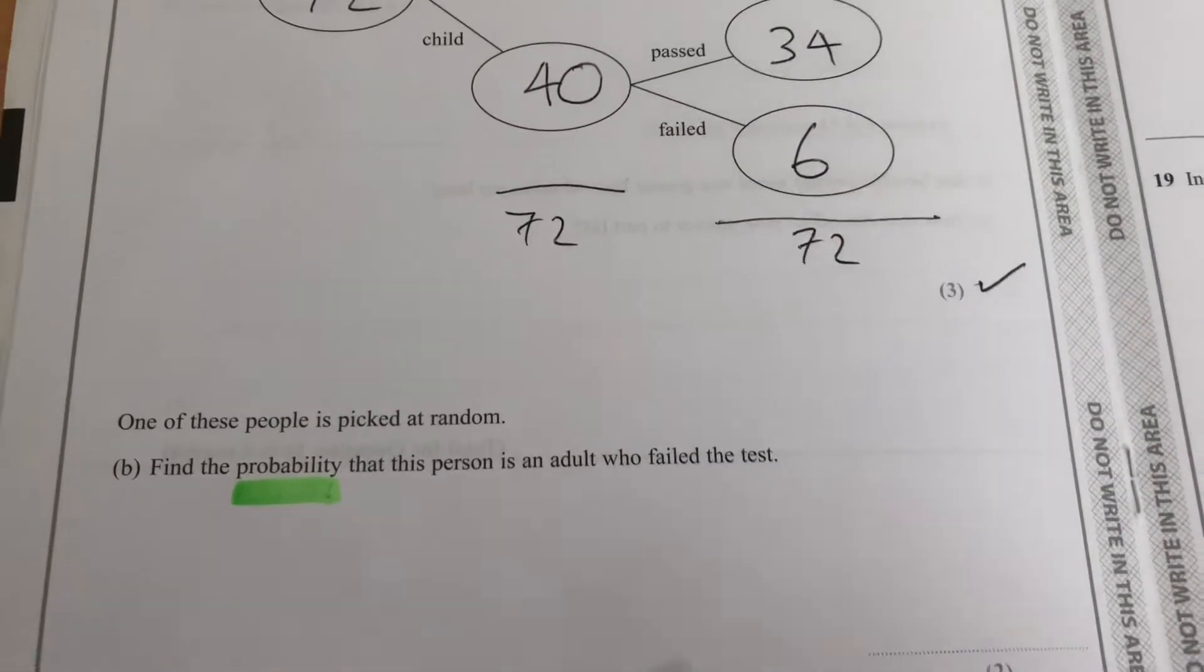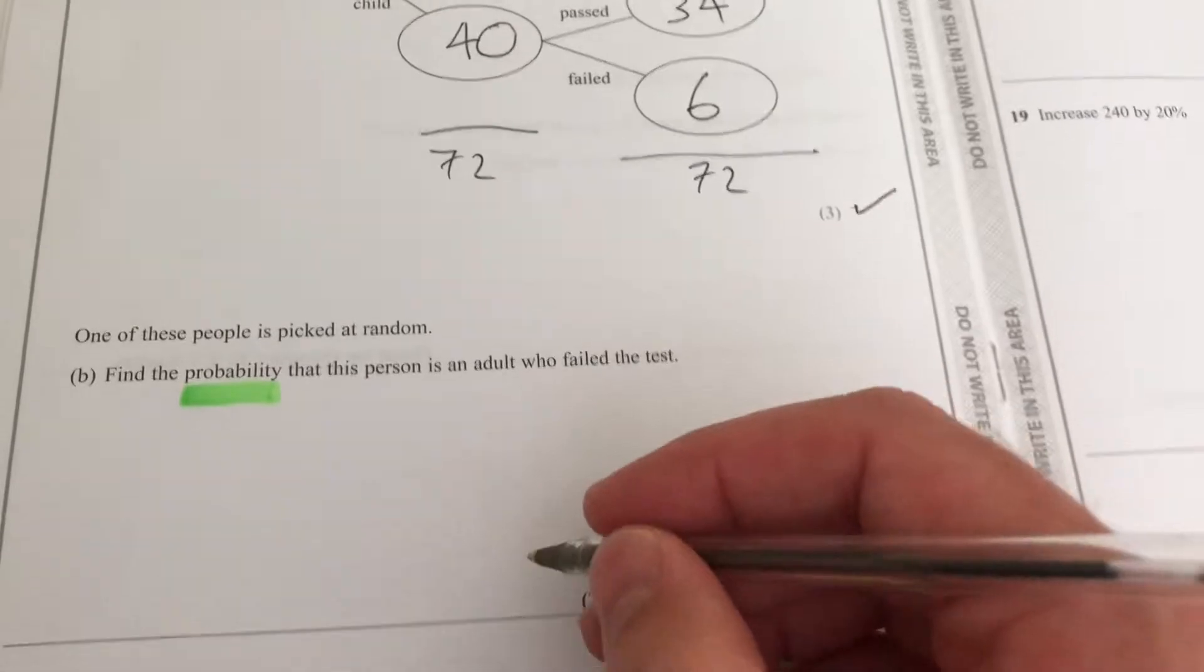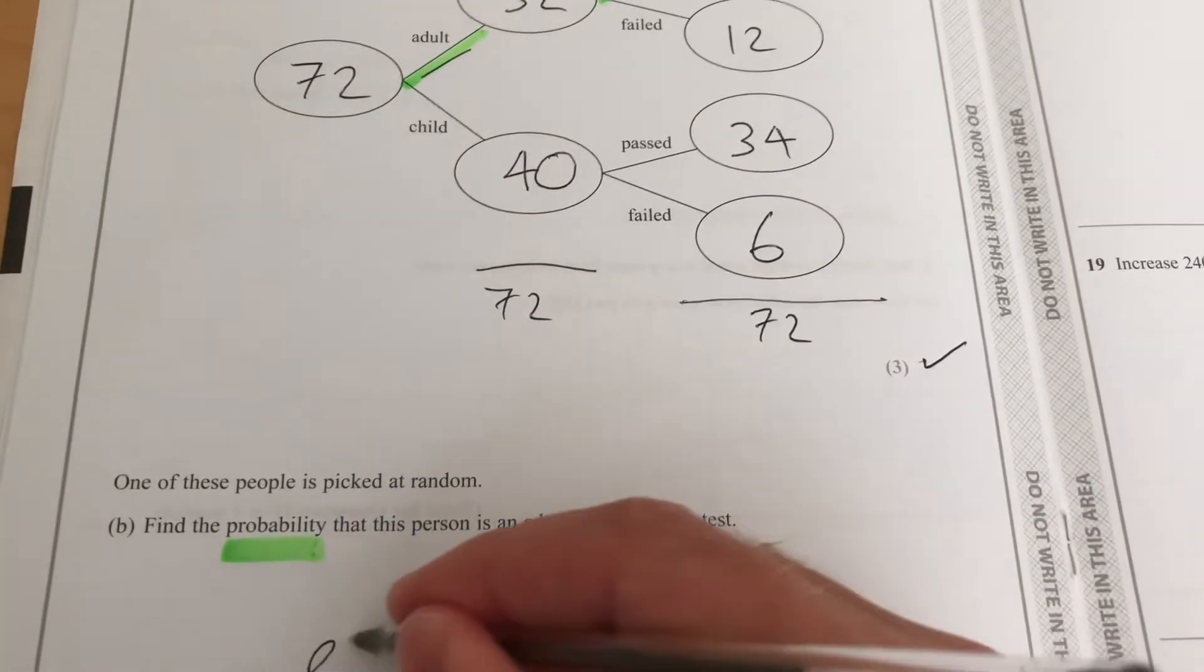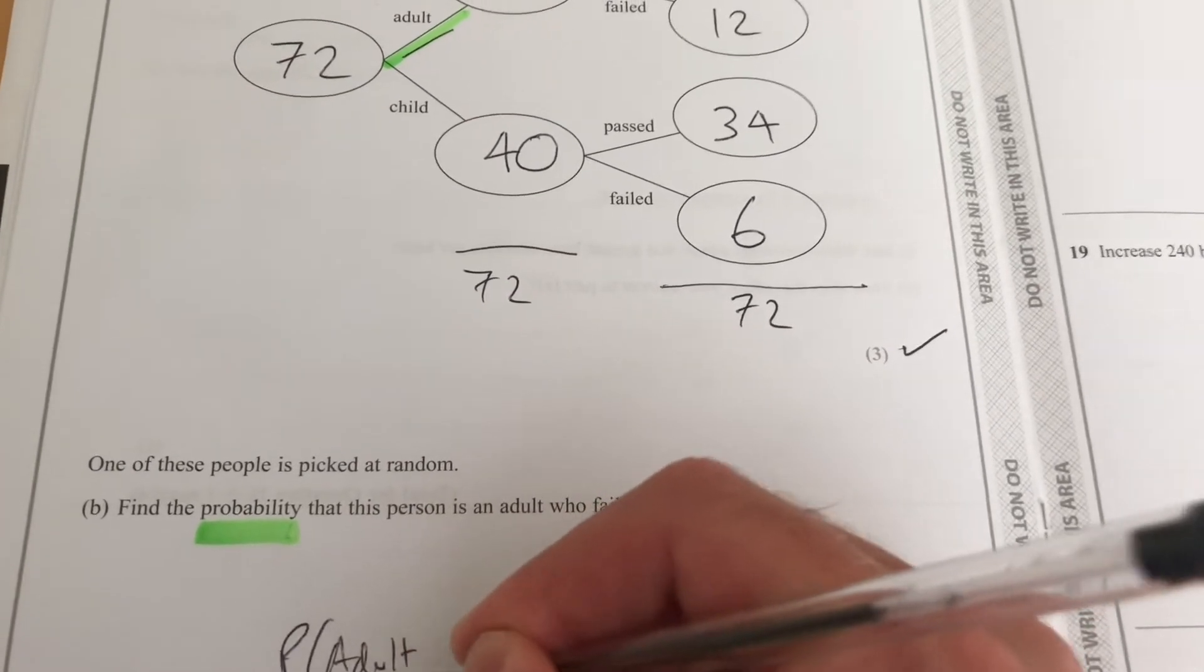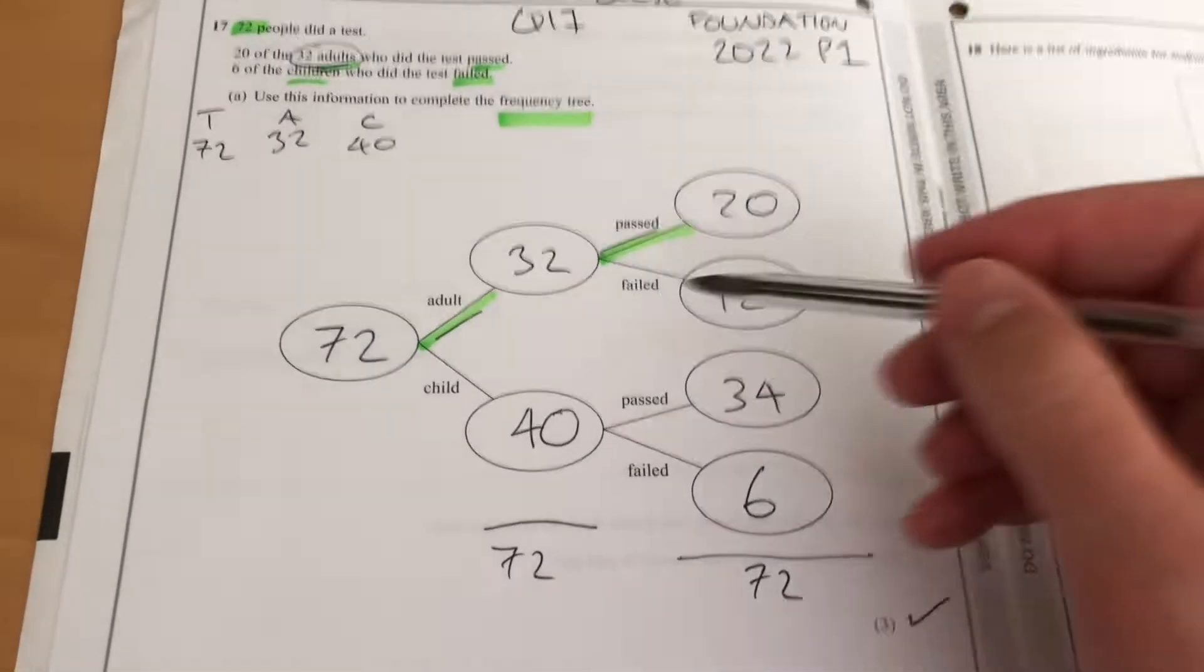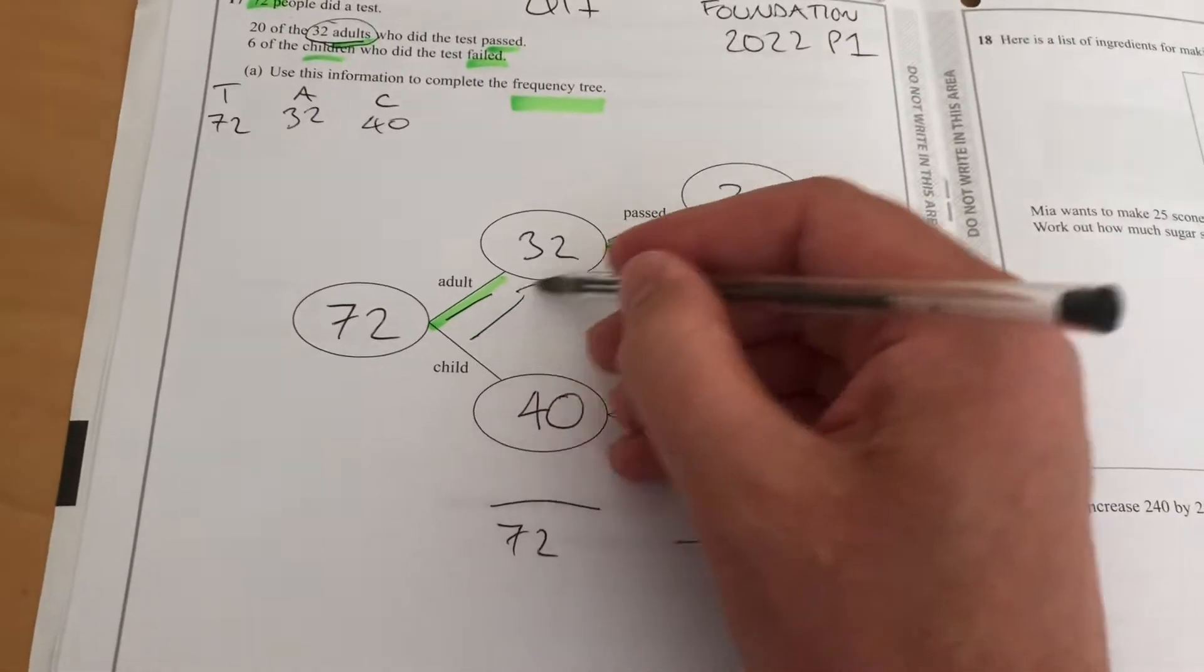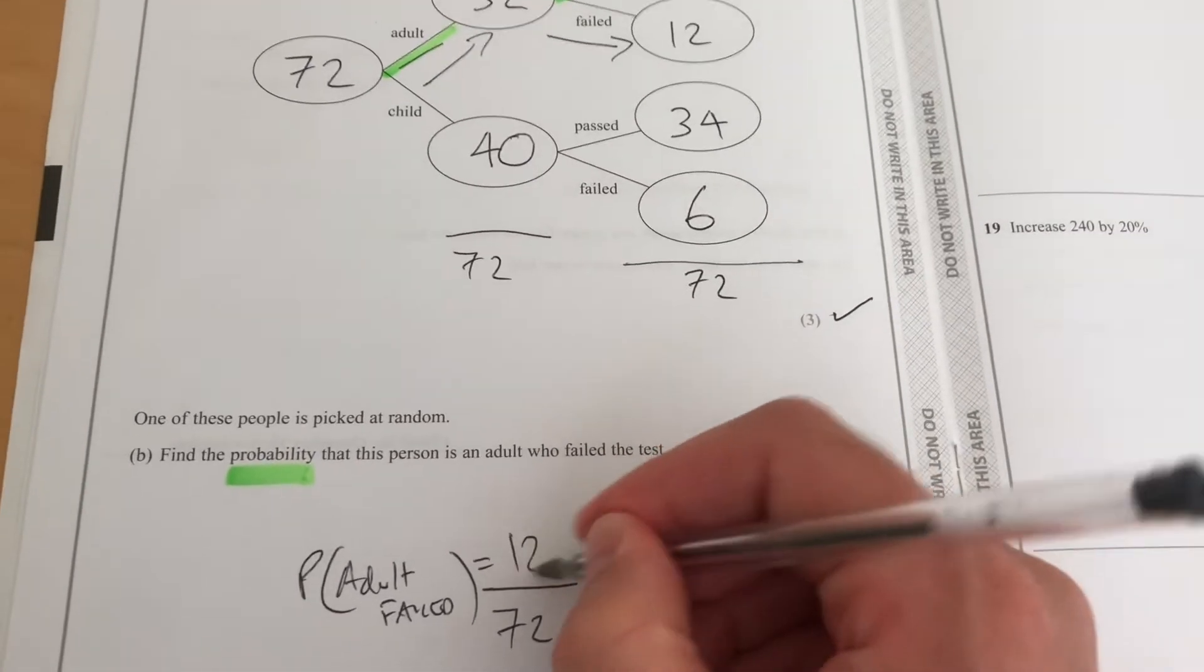So it's not conditional—it's not saying that they've picked an adult, they're not saying they've picked a child—so it's out of 72. 72 will be our denominator. Probability of an adult that failed: something out of 72. Let's go along here. Adult who failed: 12.